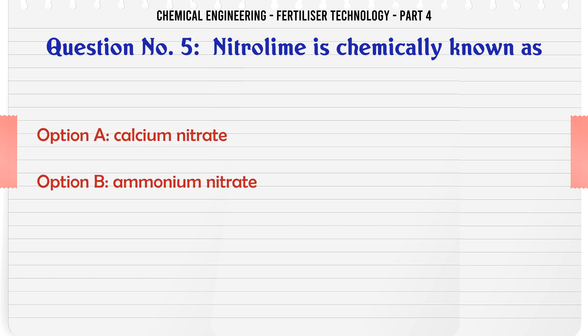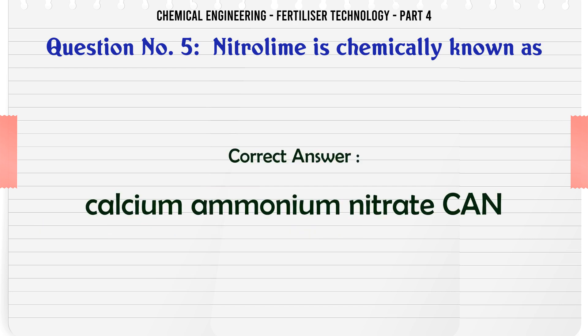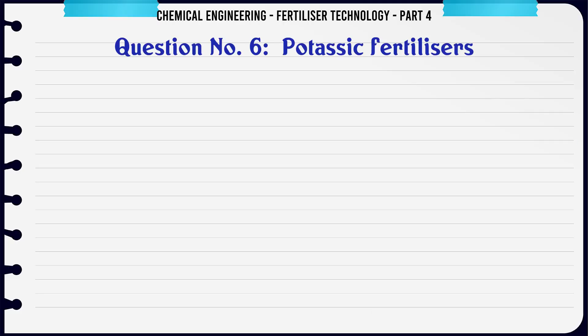Nitrolime is chemically known as: a. calcium nitrate, b. ammonium nitrate, c. calcium ammonium nitrate (CAN), d. none of these. The correct answer is: calcium ammonium nitrate (CAN).